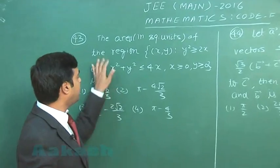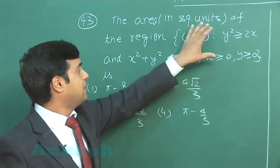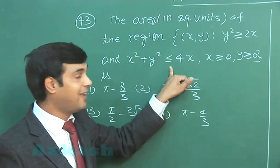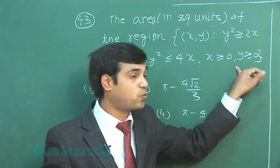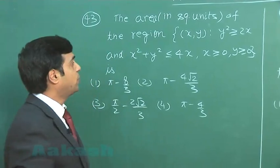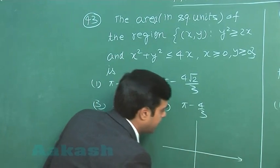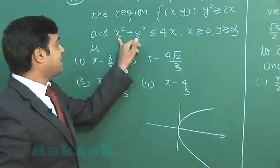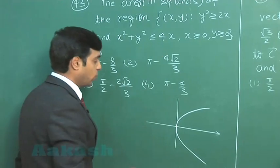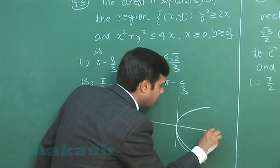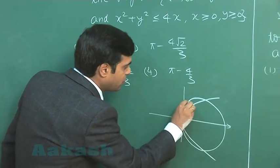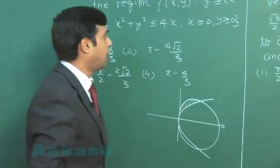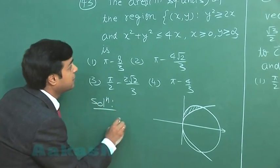Let us talk about question 43 from area. The area of the region where y² is greater than or equal to 2x and x² plus y² is less than or equal to 4x, with x and y in the first quadrant — we have to find the area. Let us draw the rough figure: y² ≥ 2x is the exterior of the parabola, and x² plus y² minus 4x ≤ 0 is the interior of the circle. We first need the point of intersection of the two curves.